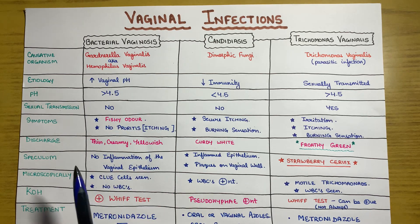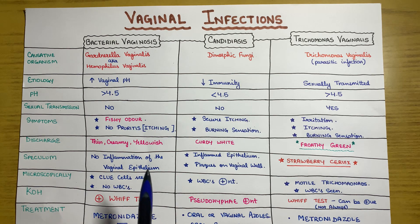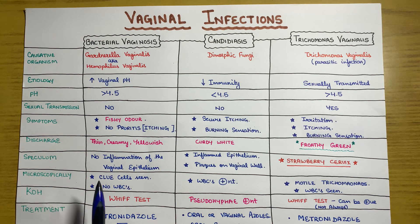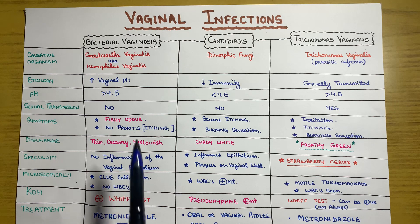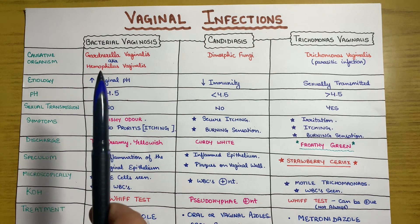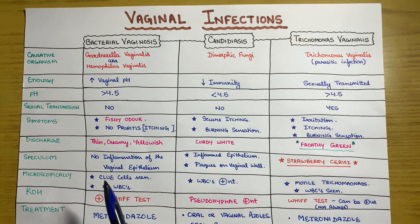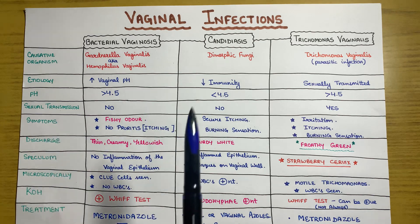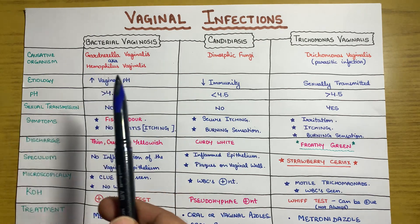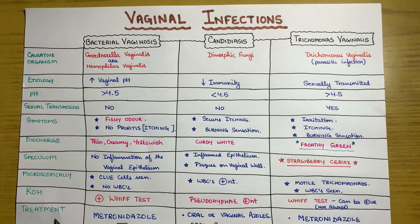On speculum examination, there is no inflammation of the vaginal epithelium. Microscopically, clue cells are seen — this is an important exam question: clue cells are seen in bacterial vaginosis and are caused by Gardnerella vaginalis, also known as Haemophilus vaginalis.